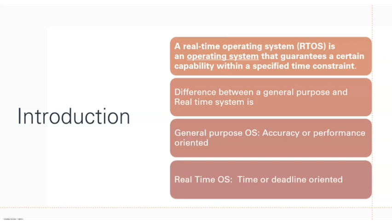That is the main difference between a general purpose operating system and a real-time operating system. A real-time operating system is an operating system that guarantees a certain capability within a specified time constraint — time is the important constraint here.